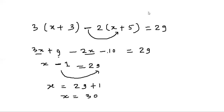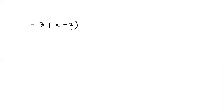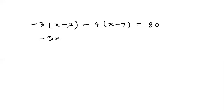One more question: suppose -3(x - 2) - 4(x - 7) = 80. This is a minus sign so the sign inside will change; this is also a minus sign so the sign here will also change. We get -3x + 6 - 4x + 28 = 80.